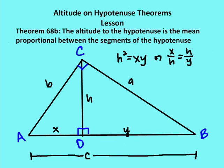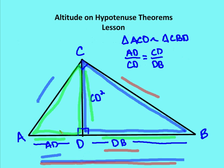Theorem 68B says: the altitude to the hypotenuse is the mean proportional between the segments of the hypotenuse. That means H squared equals X times Y. We know X over H equals H over Y — X is to H as H is to Y — so H squared equals X times Y. This is exactly what we demonstrated earlier: CD squared is equal to AD times DB.